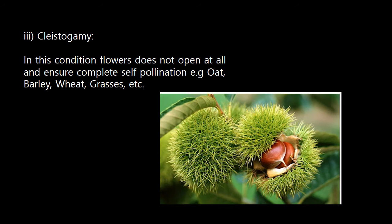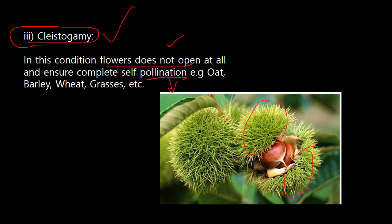Cleistogamy is a very interesting topic. In cleistogamy, the flowers do not open at all, but self-pollination is still accomplished. So when self-pollination occurs without the opening of flowers, this phenomenon is called cleistogamy. When the flowers are separated manually, you can see the seeds inside — the fertilization has already occurred without the flowers being opened. It is mainly seen in plants like oats, barley, and wheatgrass.